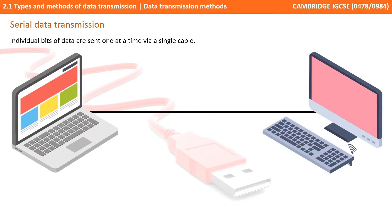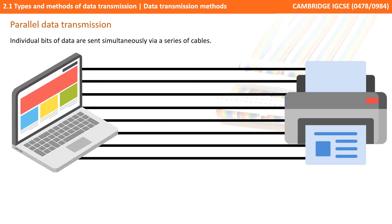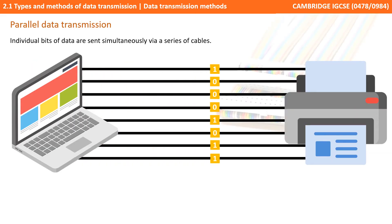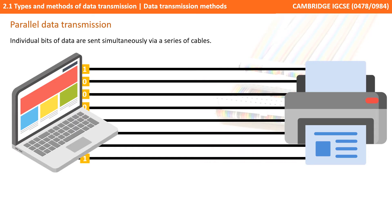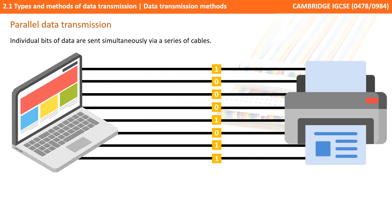With serial data transmission, individual bits of data are sent one at a time down a single cable. With parallel data transmission, individual bits of data are sent simultaneously down a series of cables.